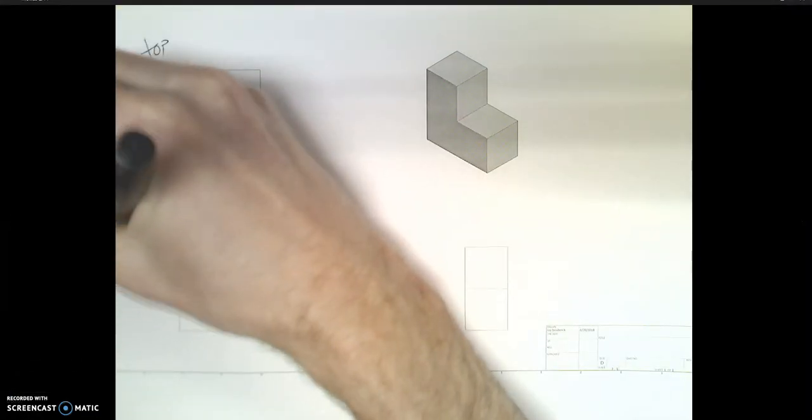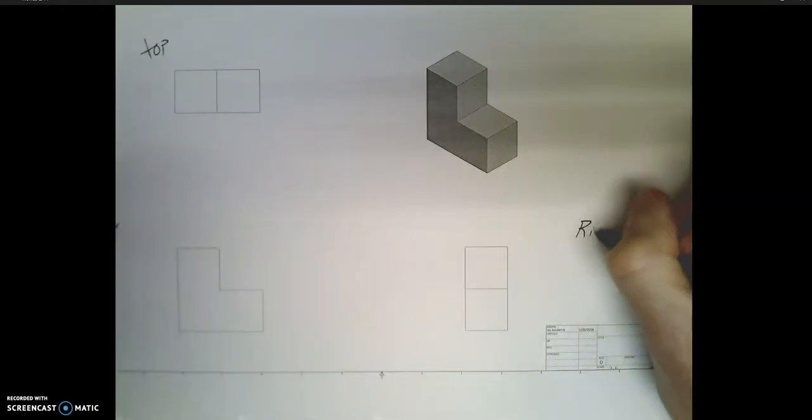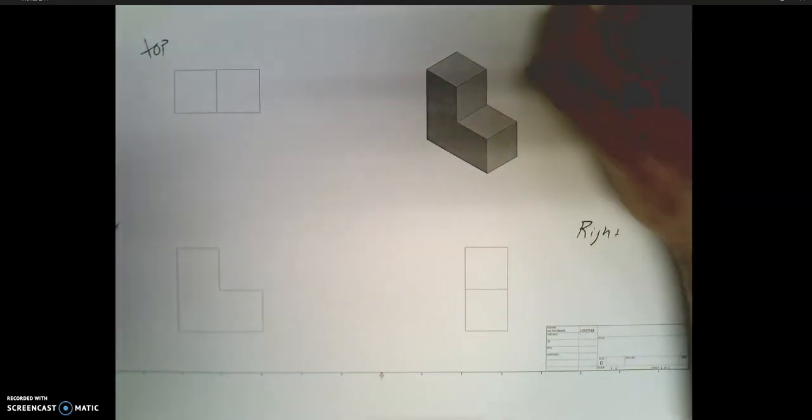Alright, so we're going to dimension this shape with uniform depth. We've got the top, the front, and the right side. We've got the ISO in the top right corner.